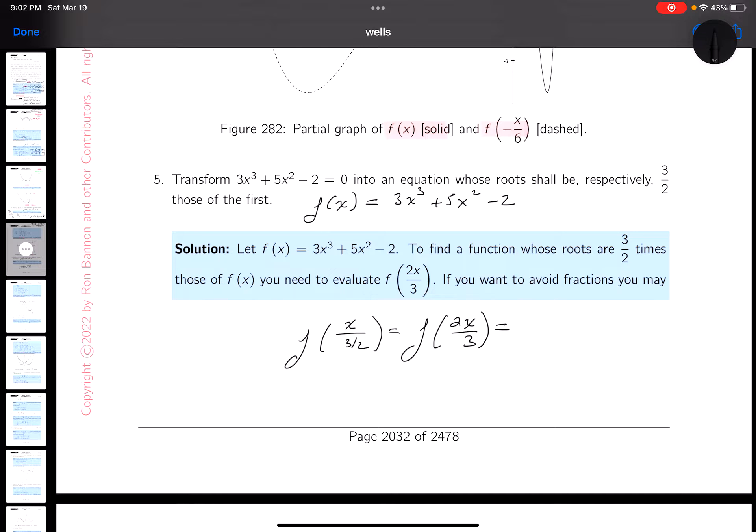Now I've got to do that. That's going to be 3 times, and a little more complicated for me to do that, it's going to be 8x cubed. I'll simplify this later. Over 27, plus 5. Well, what's x squared? 4x squared over 9, minus 2.